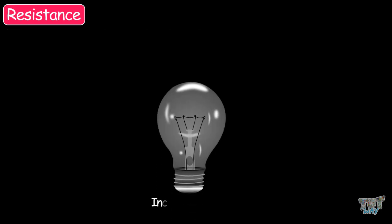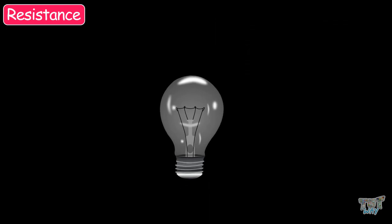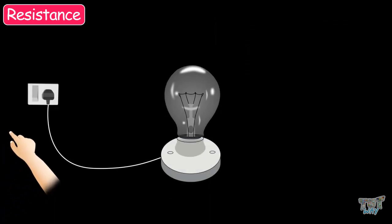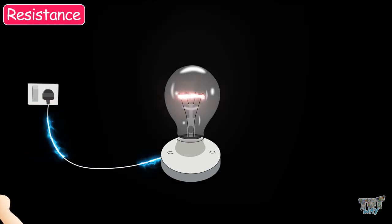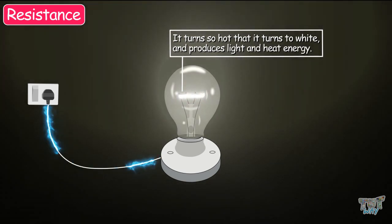As in the case of incandescent bulbs, the filament is made up of tungsten metal. This has a very high resistance and a very high melting point. So when electricity is passed through, this tungsten filament becomes so hot that it turns white and produces light and heat energy.